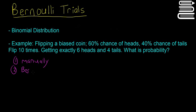So if you were to do it manually, you would have to find out the probability of getting heads, heads, heads, heads, heads, heads, that's 6 heads, then tails, then tails, then tails.